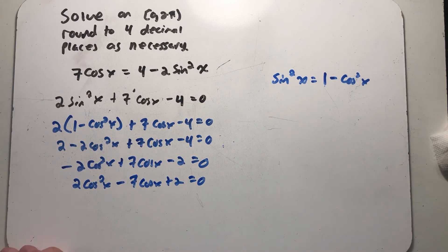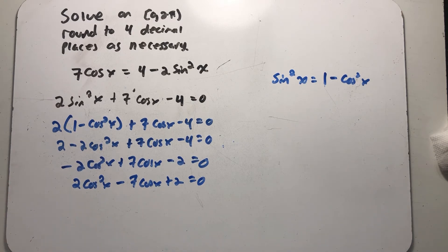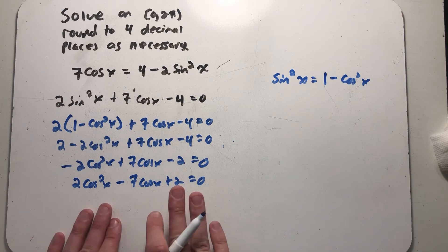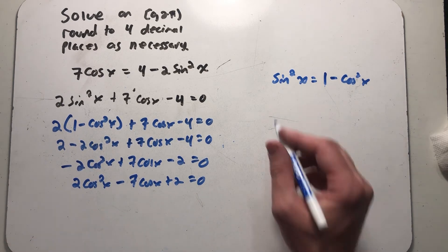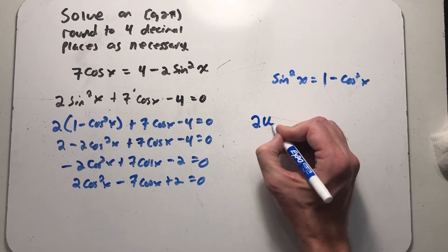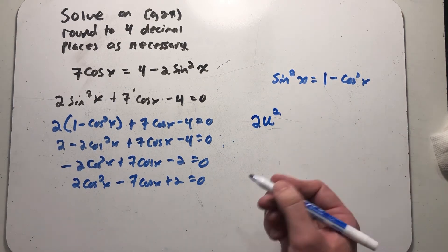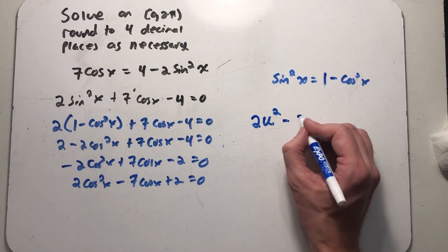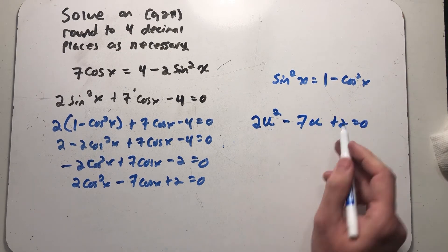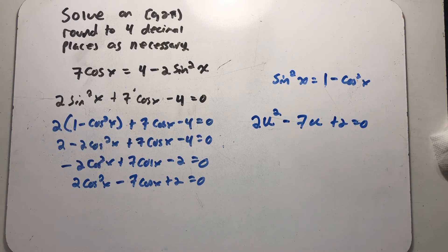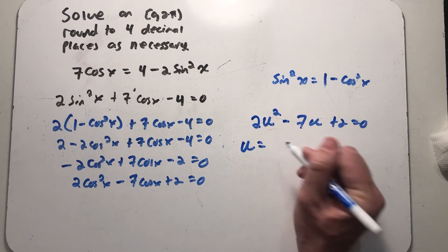Alright so I've ended up with a quadratic equation, a quadratic form, and I could try to factor this and have 2 cosine and 2 cosine and play around with this. But what I'm gonna discover is that this doesn't factor that easily. So what I see here is a quadratic form that's 2 times something squared minus 7 times something plus 2 equals 0. And if I just met that as 2u squared minus 7u plus 2, I'd use a quadratic formula to solve it.